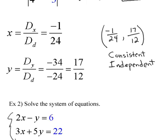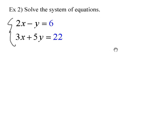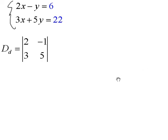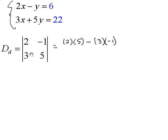Let's look at one more example. We have the system: 2x minus y equals 6, and 3x plus 5y equals 22. We'll need three matrices. For the coefficient matrix (denominator), we take the x coefficients 2 and 3 in the first column and the y coefficients, including signs, so negative 1 and positive 5, in the second column. The determinant is 2 times 5, minus 3 times negative 1 — that's 10 minus a negative 3, so 10 plus 3 equals 13. Our denominator is 13.